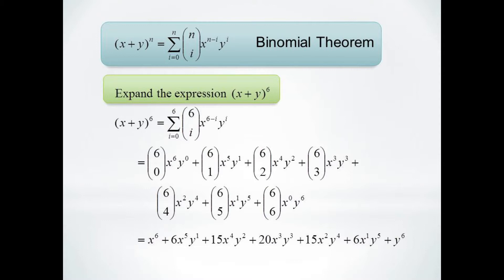In this case, 6 choose 2 is 15 and 6 choose 3 is 20. So our result is the polynomial shown here, x to the 6 plus 6x to the 5th y plus 15x to the 4th y squared plus 20x cubed y cubed plus 15x squared y to the 4th plus 6xy to the 5th plus y to the 6th.